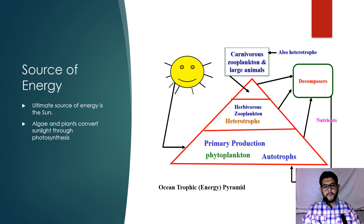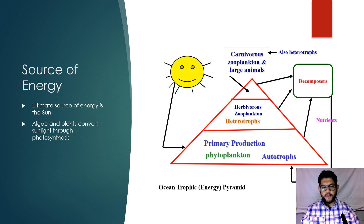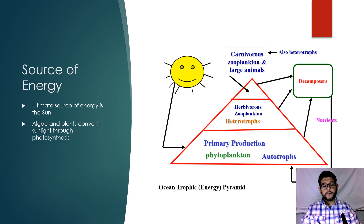The main idea here is that the ultimate source of energy is the Sun. That Sun is going to provide energy for the bottom of the trophic pyramid, or the food web. In this case in the ocean, that's going to be your phytoplankton. These are your autotrophs, and they're going to convert sunlight through photosynthesis to energy that can be used by the rest of the organisms in the ocean.